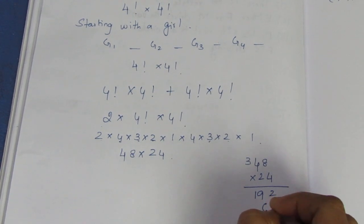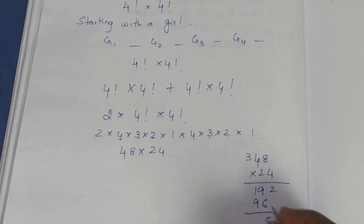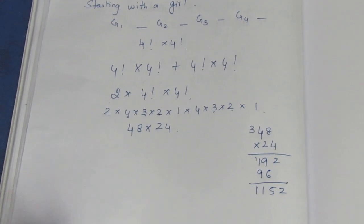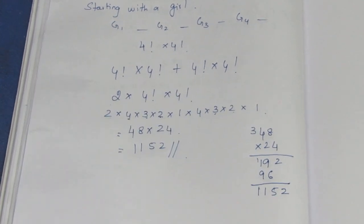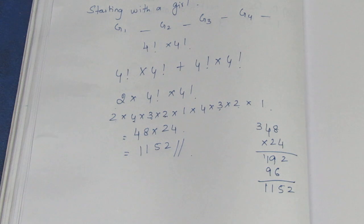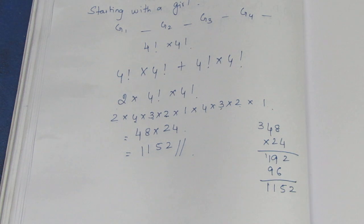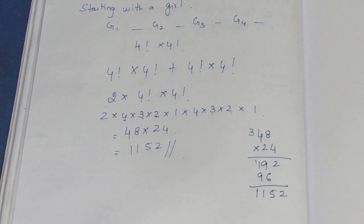The final answer is 1152. You can solve these two cases and add them — the equal number of boys and girls, starting with a boy or starting with a girl, gives the same result. Add them together: the answer is 1152. Thank you.